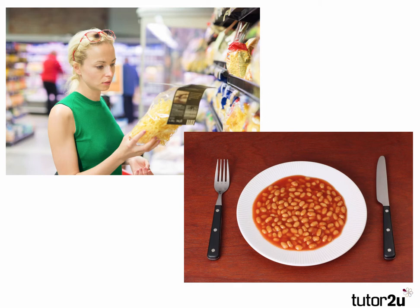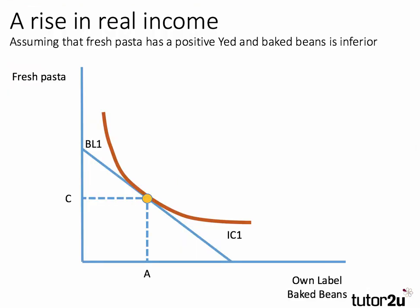One product has a positive income elasticity of demand — that's the pasta. One product has a negative income elasticity of demand, which is characteristic of inferior goods. We assume pasta has positive income elasticity, so people want to buy more when income rises. Own label baked beans is a different story. Here's the initial equilibrium at the point of tangency between indifference curve IC1 and budget line BL1 — the consumer is initially choosing quantity C of pasta and quantity A of own label baked beans.